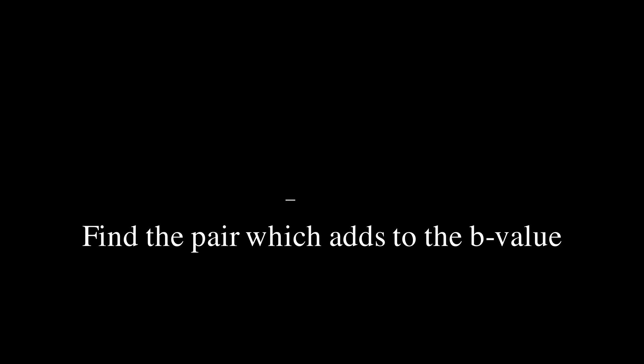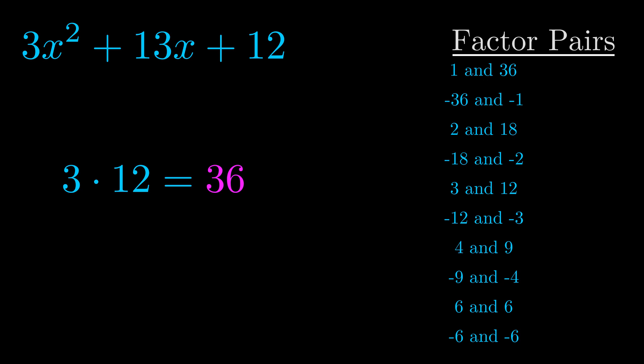The b value is the coefficient on the x term. That's the middle term, the one that we haven't done anything with yet. And really this is the only factor pair that we need.